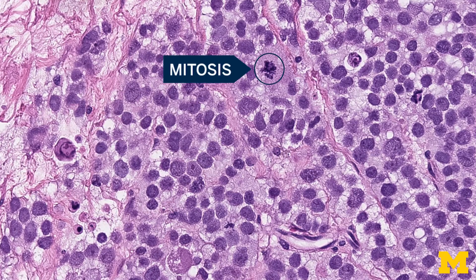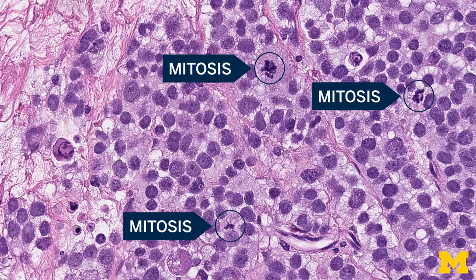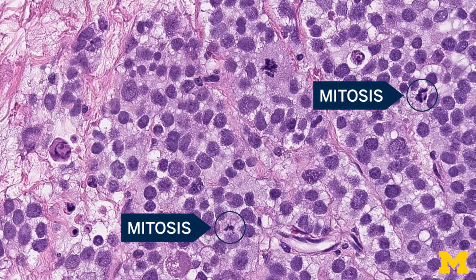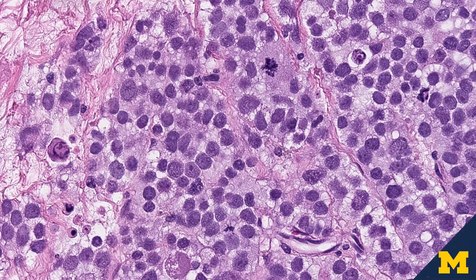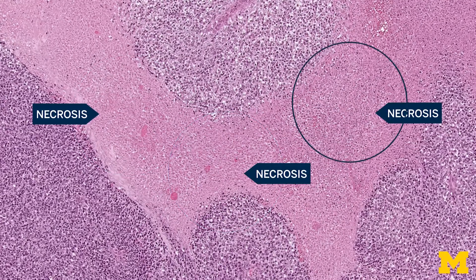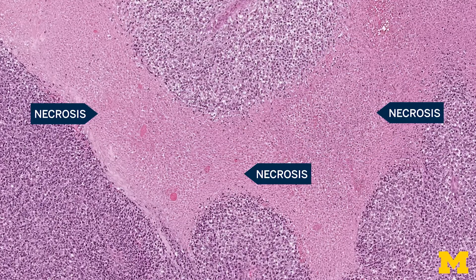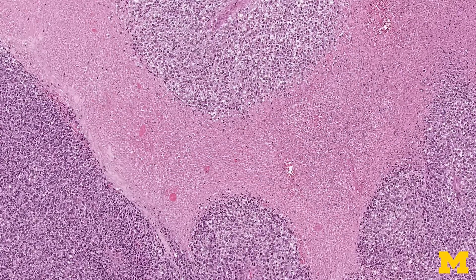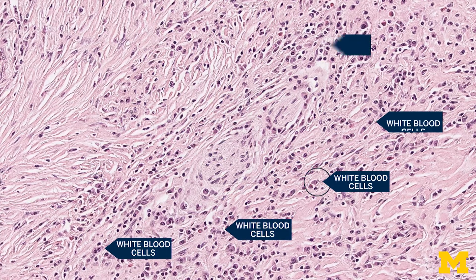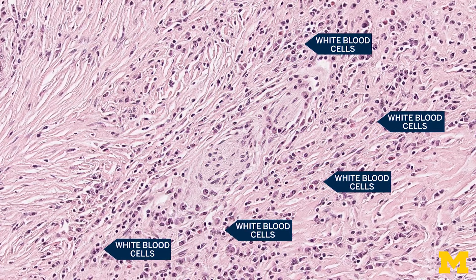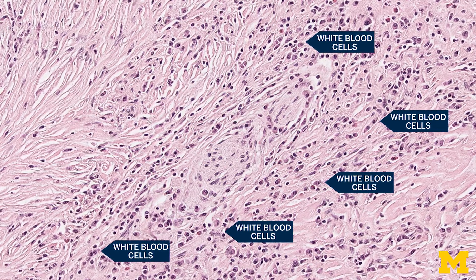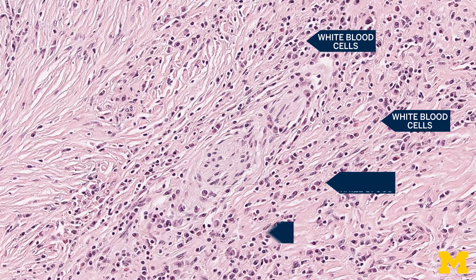Some features of cancer include sheets of very large cells that are rapidly dividing, indicated by many cells with condensed DNA called mitoses. Cancer can also often show necrosis, or tissue death, because the cells are so rapidly dividing that they outgrow their blood supply. Inflammatory processes show numerous white blood cells of different types within the tissue, which can either indicate the body's immune system fighting infection or, in some cases, attacking itself — known as autoimmune disease.